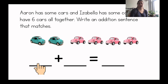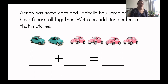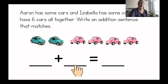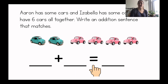So don't forget, you're counting how many cars Aaron has — the blue cars — writing it right there. And then you're adding the pink cars that Isabella has. And then equals — you're going to count how many there are all together.